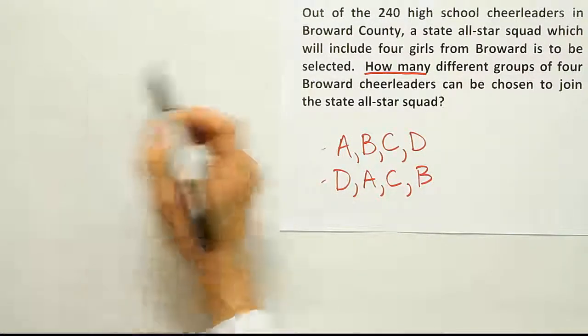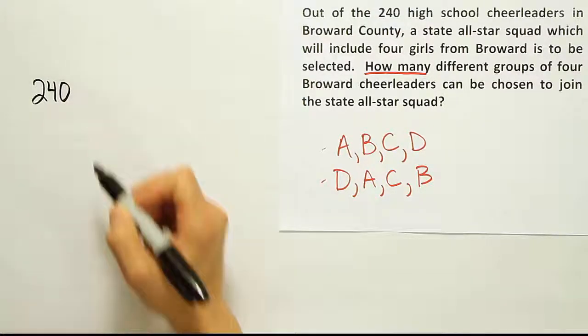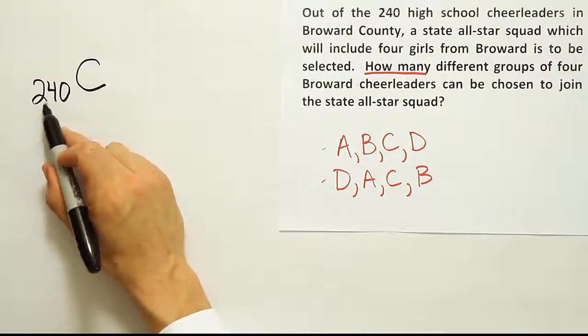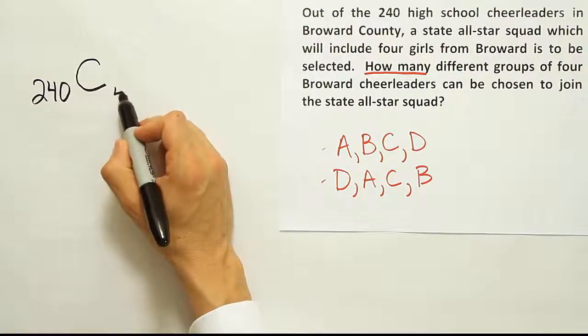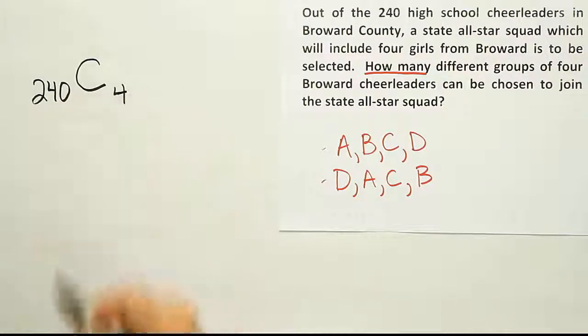In order to do that, we're going to take the big number first, the larger number, the 240. We'll write that down. And then we want to put a C to represent combinations. So 240 choose 4. So out of 240 girls, choose 4 to join the all-star squad. And that's the proper solution to the problem.